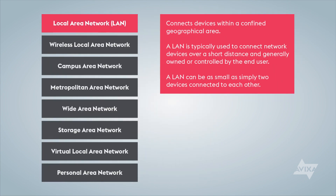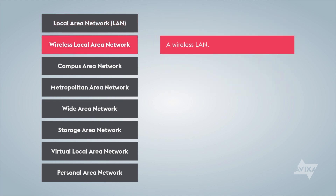A local area network connects devices within a confined geographical area. A LAN is typically used to connect network devices over a short distance and is generally owned or controlled by the end user. A LAN can be as small as simply two devices connected to each other. A wireless local area network is a wireless LAN.